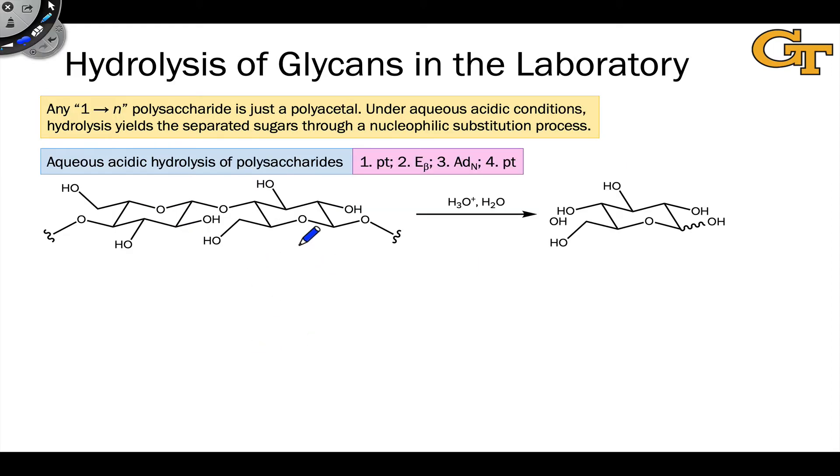We can think of polysaccharides just as monosaccharides that have undergone anomeric substitution over and over again with the next monosaccharide along the chain. What this means is that we can get back the monosaccharide units through a hydrolysis process, and the essence of the hydrolysis process we've really seen already in the conversion of, say, a glycoside back to a monosaccharide. The essence of the process is nucleophilic substitution with water as the nucleophile.